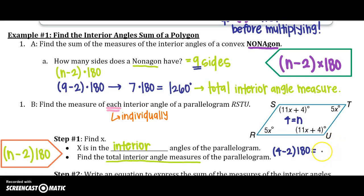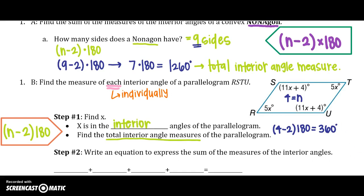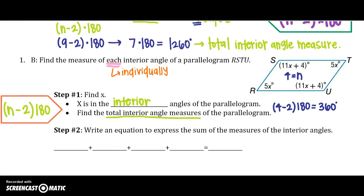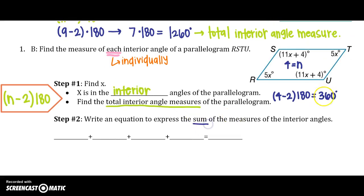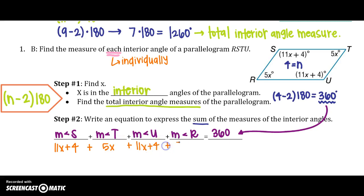And you're going to say, well, do we have to show all that work or can we just put it in our calculator? Yes, you must show all of that work. So we know the total equals 360 degrees. Now we need to write an equation to express that sum. Remember the sum is that 360 degrees. So we can say the measure of angle S plus the measure of angle T plus the measure of angle U plus the measure of angle R equals 360 degrees. That's what we just found. Then we can substitute 11x plus 4 plus 5x plus 11x plus 4 plus 5x. Again, making sure you show all of your work equals 360 degrees.